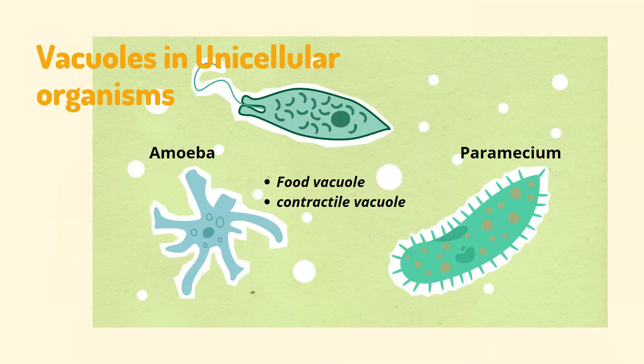We also see specialized vacuoles in unicellular organisms like amoeba and paramecium. Food vacuoles are specialized in storing food in these unicellular organisms. We also have contractile vacuoles — as the name suggests, they contract when they contain fluid, and when the fluid exits, they squeeze, shrink, or contract. Hence the name contractile vacuoles.